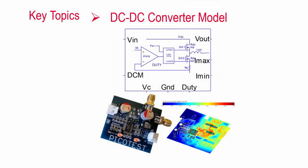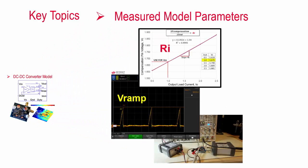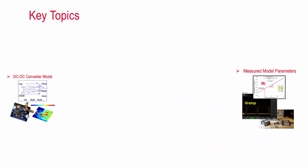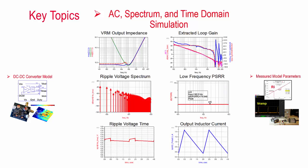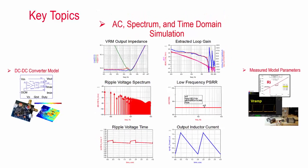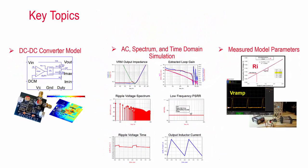In this video, I'll show you how to create an accurate simulation model for both current mode and voltage mode converters. I'll show you the two simple measurements that reveal the data that's missing from the datasheet. I'll show you how to quickly simulate AC, spectrum, and time domain results that can even include the printed circuit board using EM simulation. And at the end, I'll share my ADS workspace with you so that you can use it for your own projects right away.